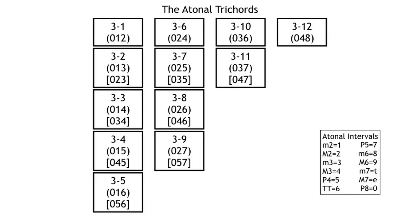Secondly, atonal trichords — there's only 12 of them. Tetrachords, there's a whole bunch more. Pentachords, even more than that. Hexachords, even more than that. So with only 12 trichords, it becomes fairly easy to memorize a smaller group of things, which you can then play around with — sort of like playing in the sandbox — to figure out how atonal music goes together. What you see in front of you right now is the entire system of the 12 atonal trichords.